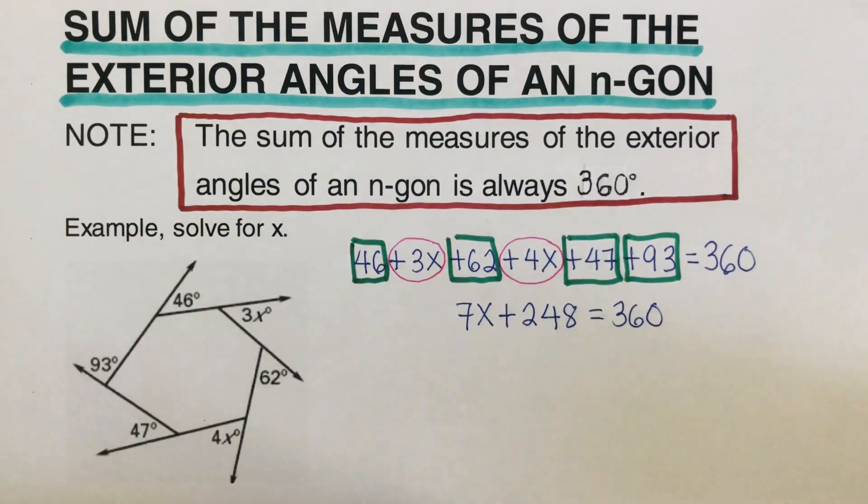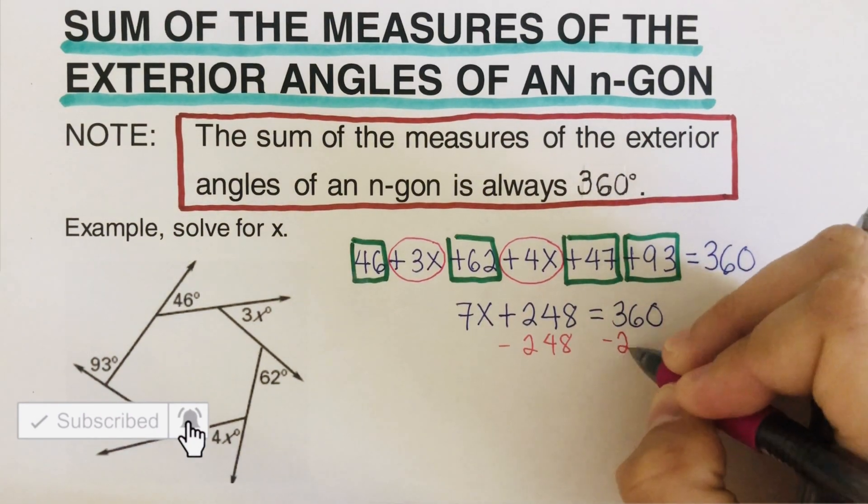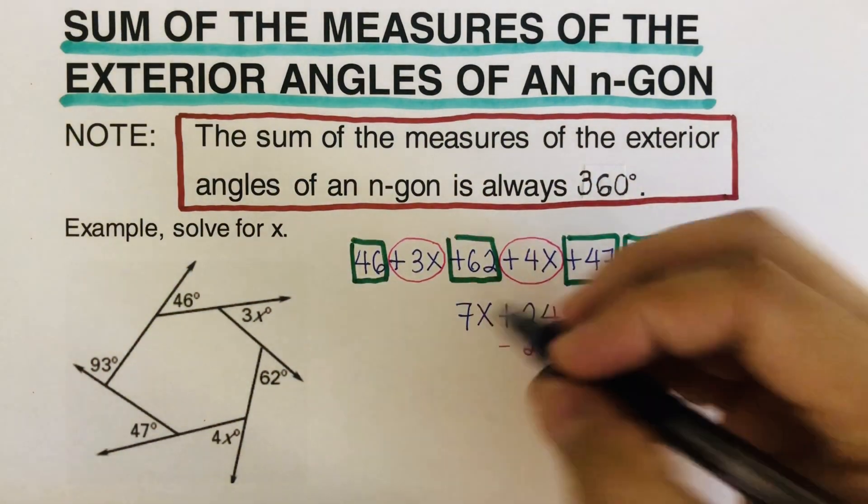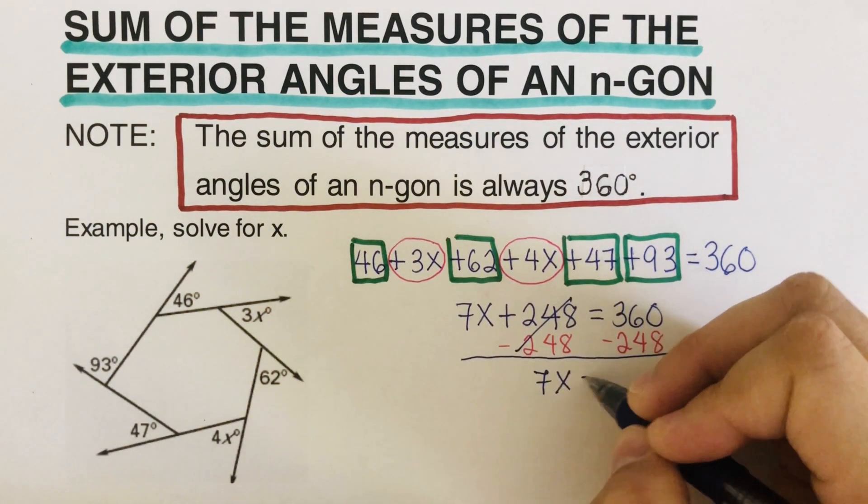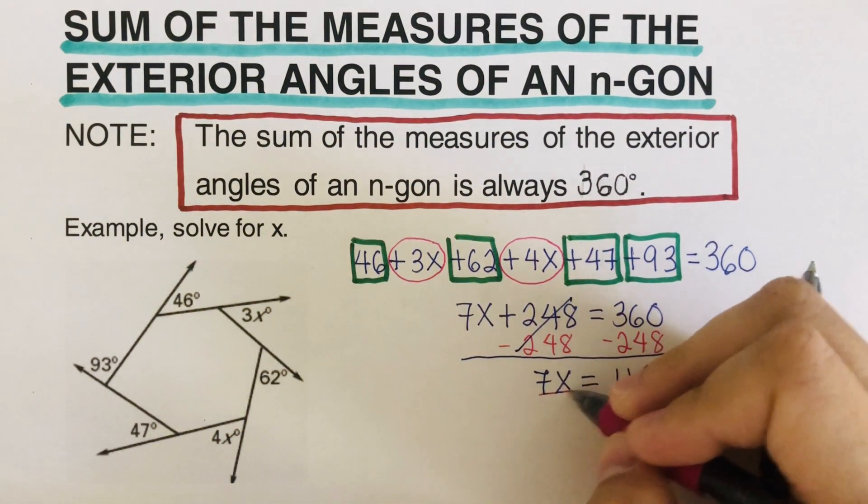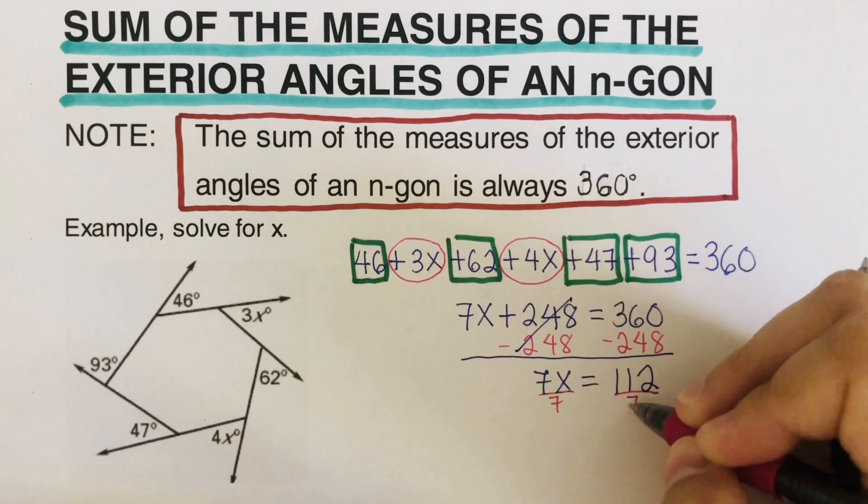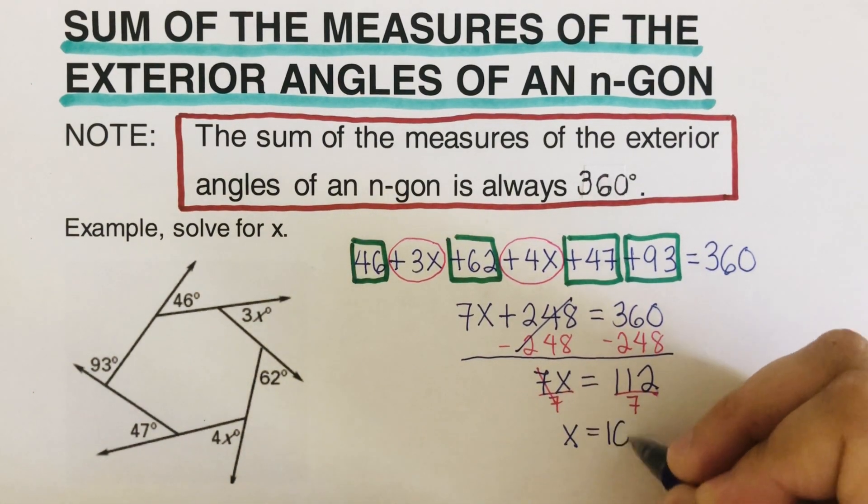From here, we are going to subtract 248 from both sides. We can cross out the 248, so we're left with 7x equals 112. We divide both sides by 7, so we are left with x equals 16.